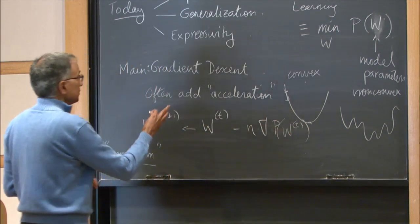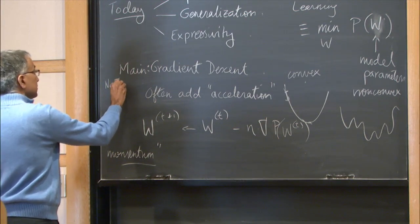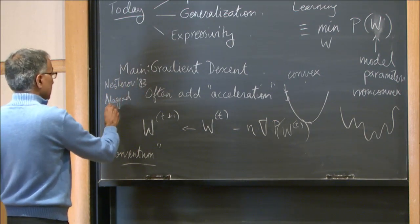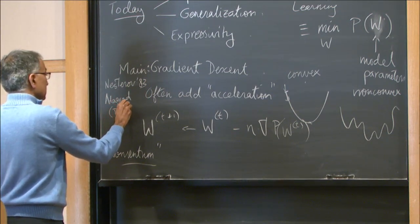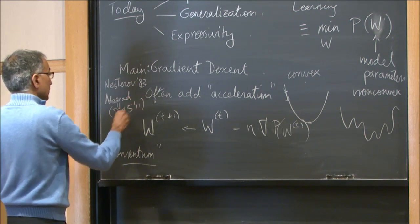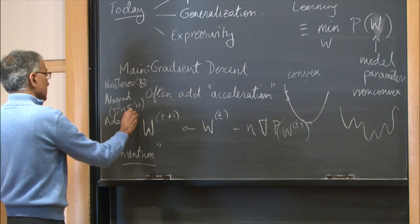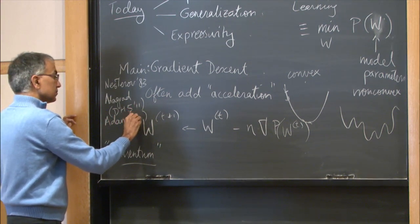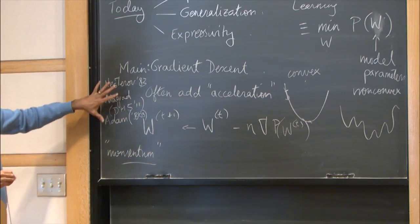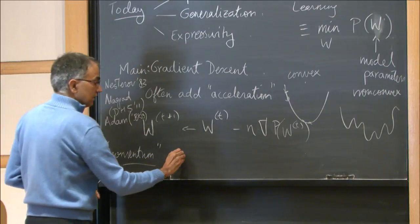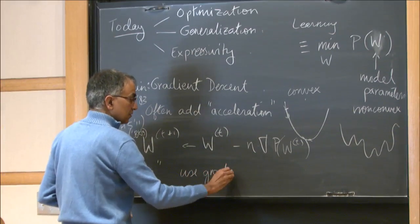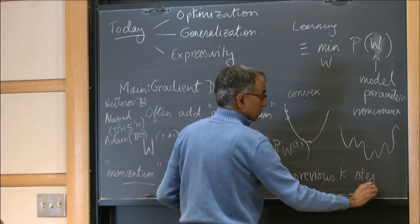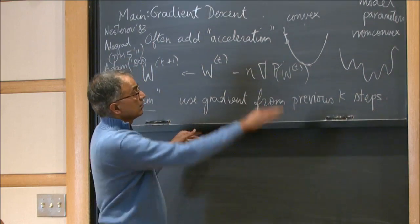That's a beautiful theory. Some key names: there's a Nesterov paper from 1983, then modern versions include AdaGrad by Duchi, Hazan, and Singer from 2011, and Adam by Kingma and Ba from 2013 or so. These are the main names in accelerated methods. Momentum uses gradient information from the previous k steps, and it can be shown that this accelerates the convex case.